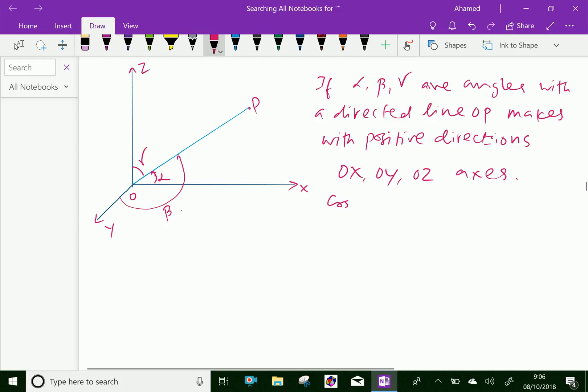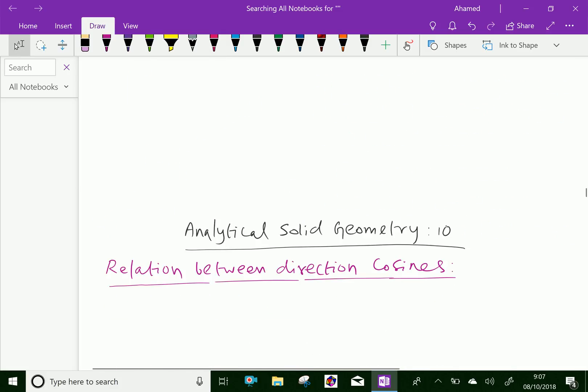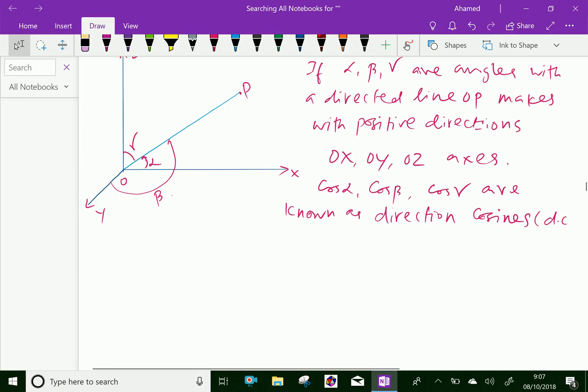then we can say cos alpha, cos beta, and cos gamma are known as direction cosines, that is DC of OP, direction cosines of the line OP.